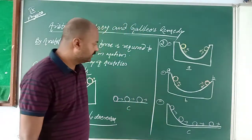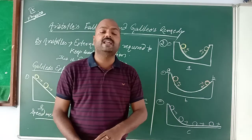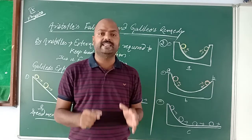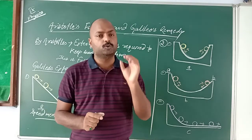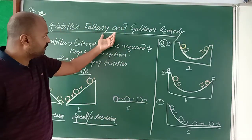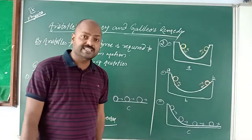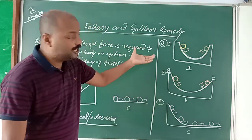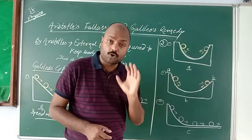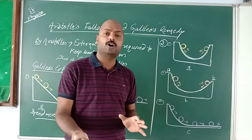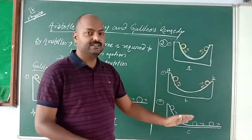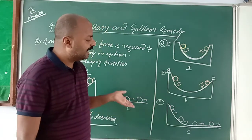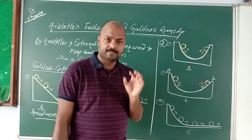Galileo then concluded that if the body is moving in uniform motion, no external force is required over the object to keep it in motion. This is Aristotle's fallacy and Galileo's remedy. Aristotle said that to keep an object moving, we need external force. But Galileo said that if there is no change in the velocity or speed of the body, the body will remain at the same velocity, meaning no external force is required and the body will keep on moving without coming to rest.